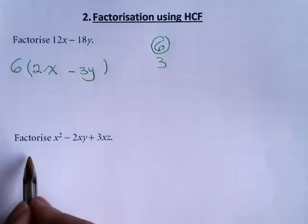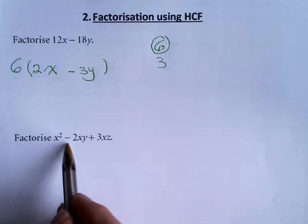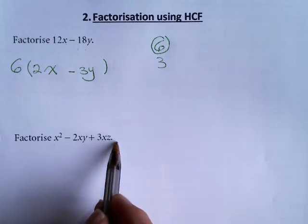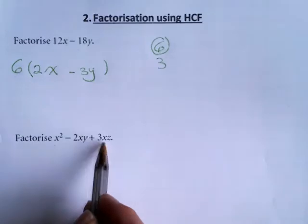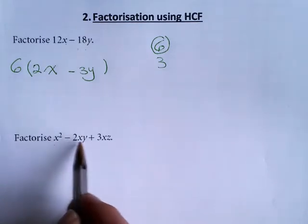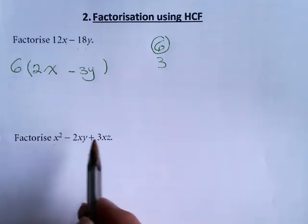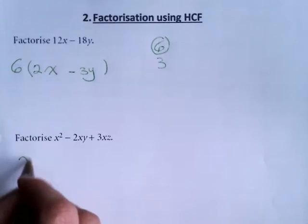Another example on how to factorize by using the highest common factor, we have x squared minus 2xy plus 3xz. The common factor between the three of them is the x, and it is the highest common factor because it's the only common one. So I'm going to take the x out.